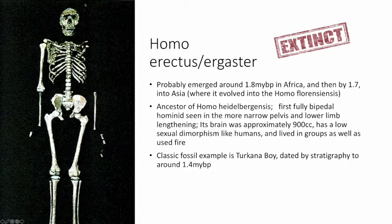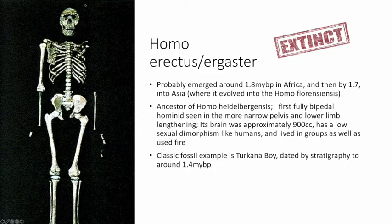Homo erectus had a brain of approximately 900 cubic centimeters — large relative to other primates, but quite a bit smaller than archaic or modern Homo sapiens. It has a bit less sexual dimorphism than humans, meaning a little less distinction between male and female fossils. We believe they lived in groups and used fire, making this a social primate with some degree of control over fire. The classic example is the Turkana Boy, dated by stratigraphy to around 1.4 million years before present, and it's one of the most intact early hominids from the genus Homo.